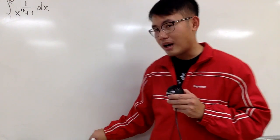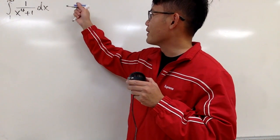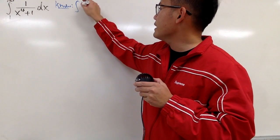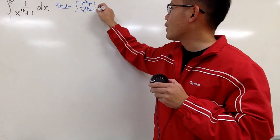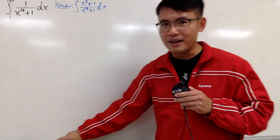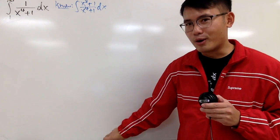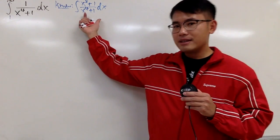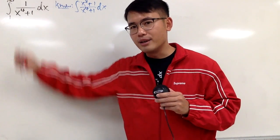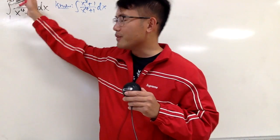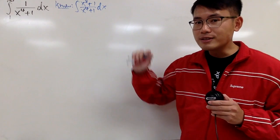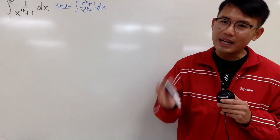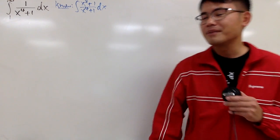Recently we did a video on the integral of (x squared plus 1) over (x to the 4th power plus 1) dx, and that was a lot of fun — not as fun as the hardcore partial fraction, but pretty good. In fact, we can use this idea to do that integral, with limits from 1 to infinity. This is also a famous step when you want to integrate the square root of tangent x. I'll have links in the description for those videos.